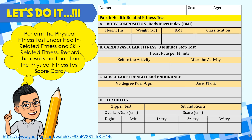B. Cardiovascular fitness: 3-minute step test — record your pulse rate before and after the activity. C. Muscular strength and endurance: under 90-degree push-ups, count the proper push-ups made; and for basic plank, use time — 90 seconds (1 minute and 30 seconds) is the maximum. D. Flexibility: do the zipper test reaching right over left and left over right, measuring the gap in centimeters; and the sit and reach — get the score in centimeters for 3 trials.